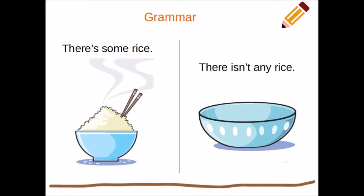So in all those examples, the ones on the left had the food — they had the rice, the milk, the cake, the ice cream, the ham, the chicken. We saw it. We can see that there is some. And on the right, they were all missing — it was empty. So maybe we ate it all, or maybe there just wasn't any in the house. So let's move on to another example.